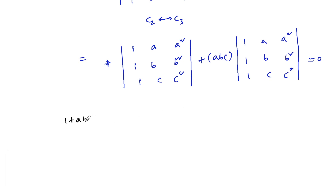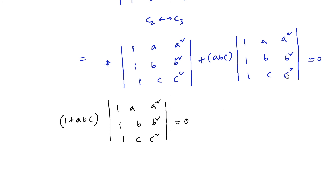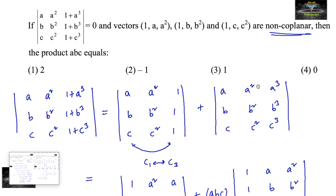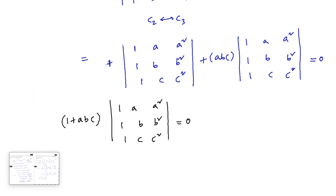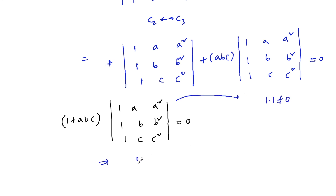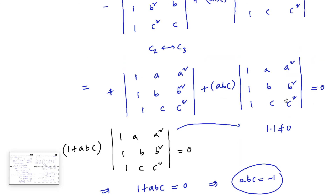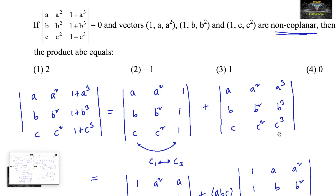So we have (1 + abc) times the determinant of the matrix with rows (1, a, a²), (1, b, b²), (1, c, c²) equal to 0. Since the vectors (1, a, a²), (1, b, b²), (1, c, c²) are non-coplanar, their determinant cannot equal 0. Therefore, 1 + abc must equal 0, which gives abc = −1. So the answer is the second option.